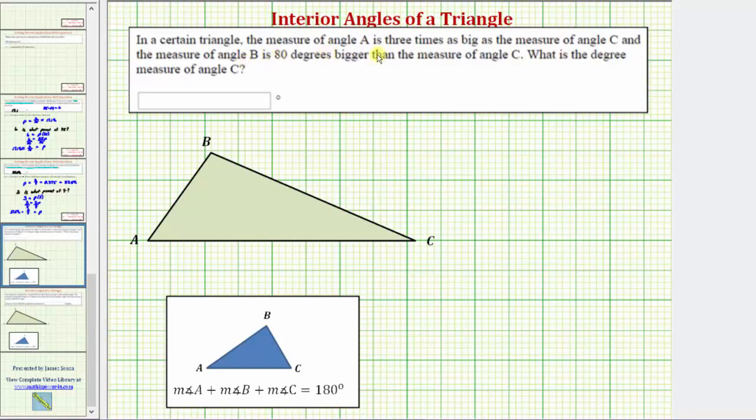In a certain triangle, the measure of angle A is three times as large as the measure of angle C, and the measure of angle B is eighty degrees larger than the measure of angle C.